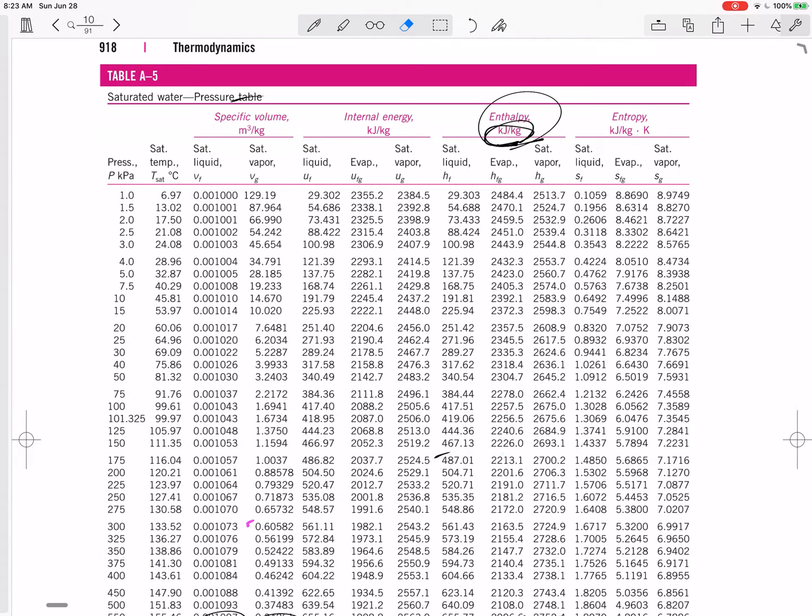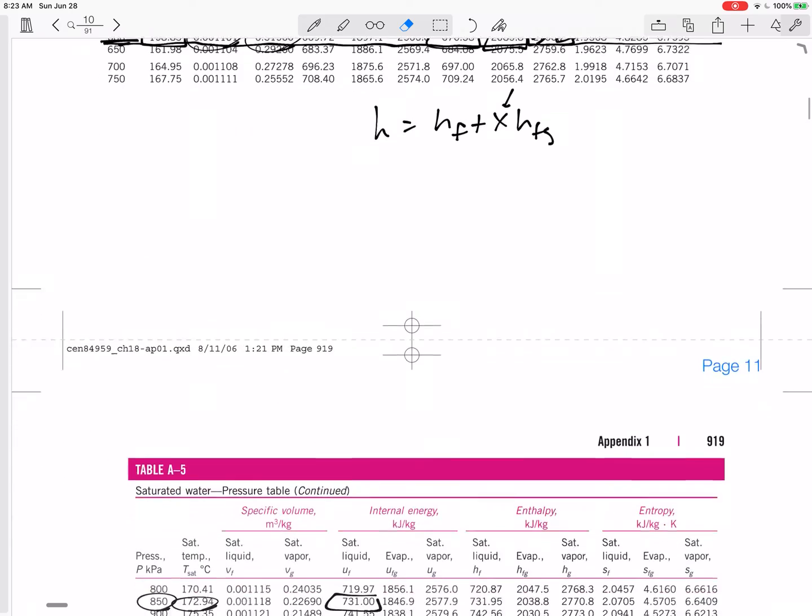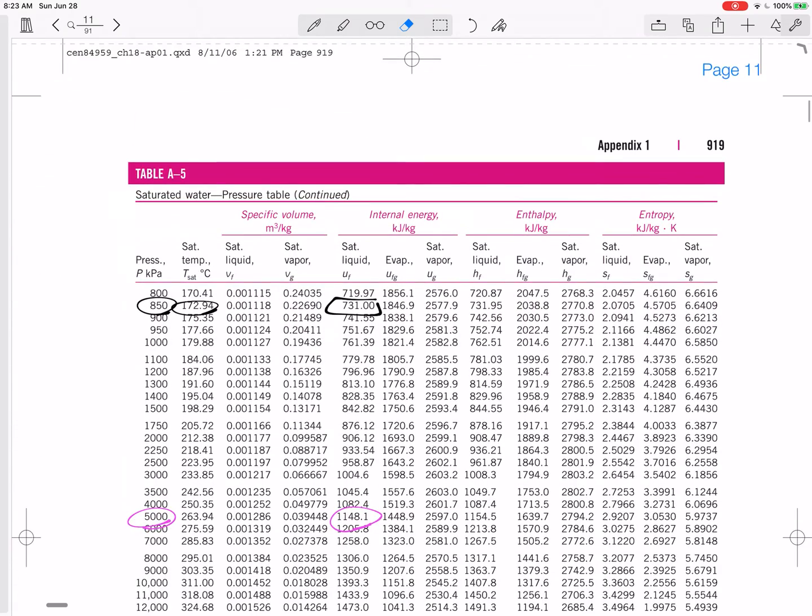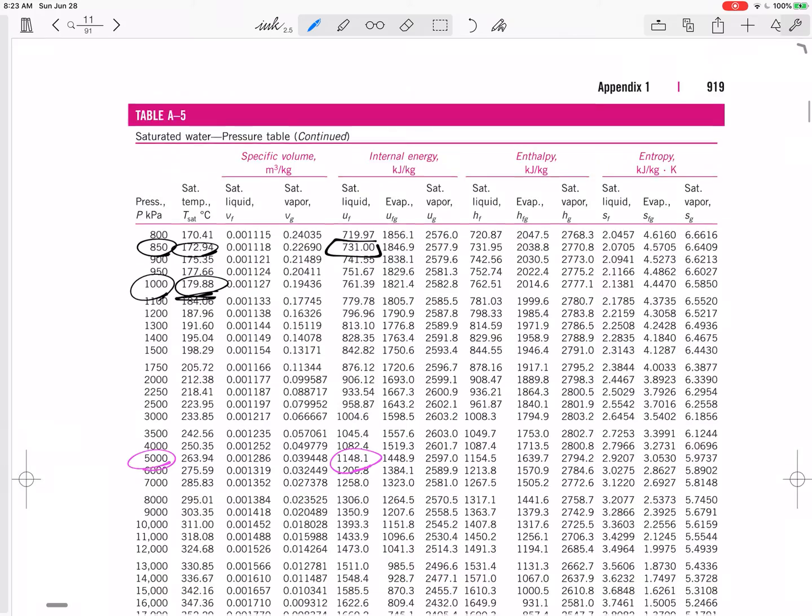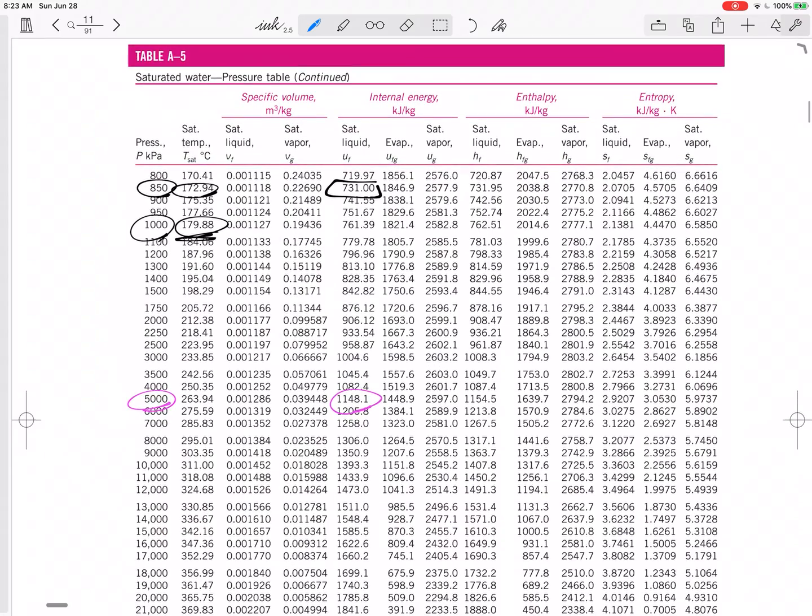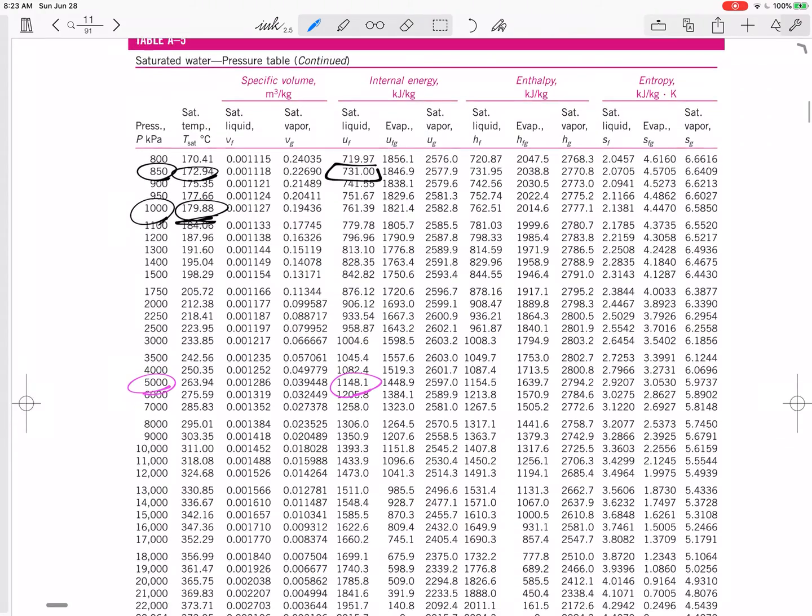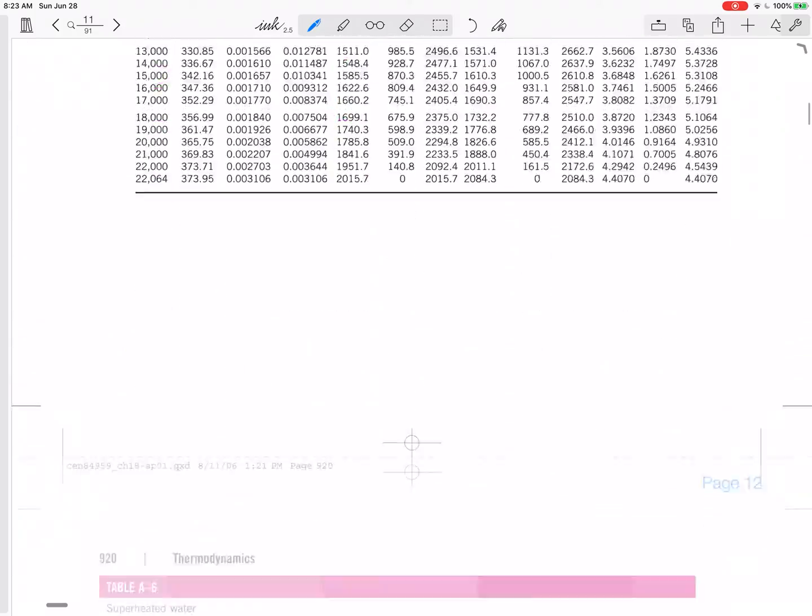My T_sat is 170. Now I'm at a T of 300. This is superheated. You probably already knew it, and it told you steam, right, instead of a mixture. But I like to start there and it tells me it's superheated.